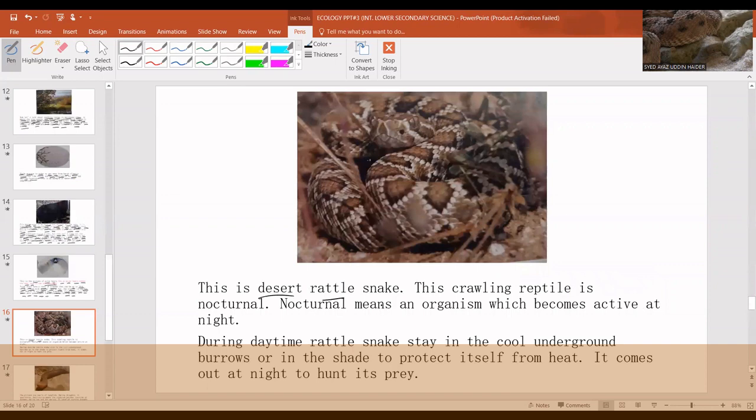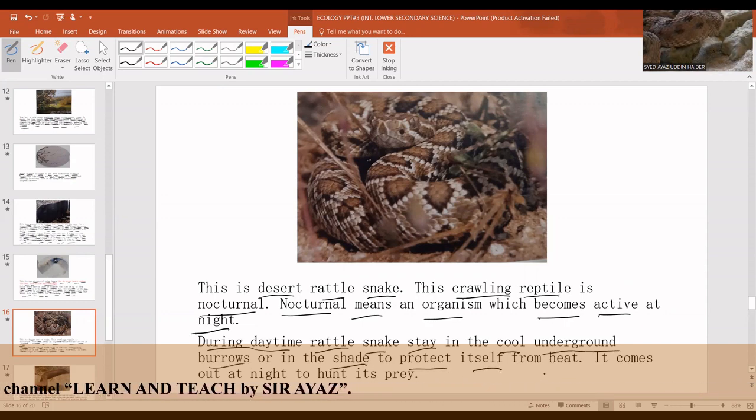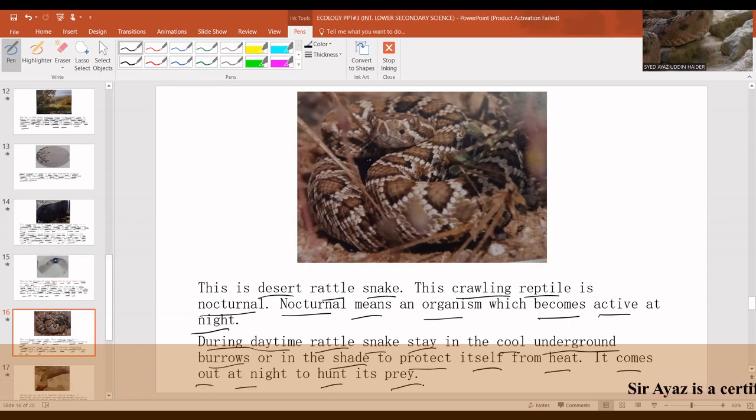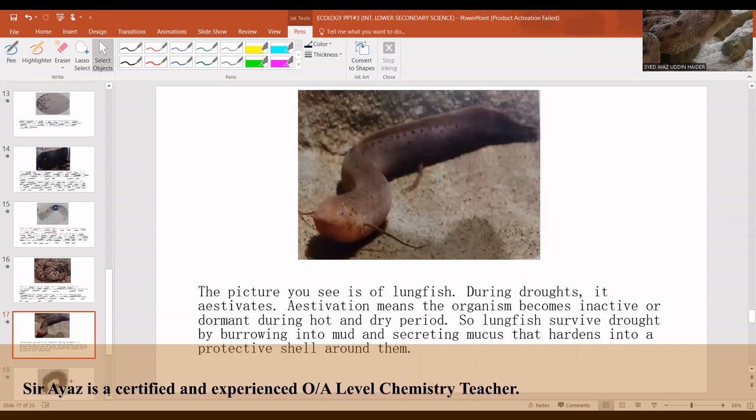This is a desert rattlesnake. This crawling reptile is nocturnal. Nocturnal means an organism which becomes active at night. During daytime rattlesnakes stay in cool underground burrows or in the shade to protect itself from heat. It comes out at night to hunt for food which is its prey. Its prey usually includes rats and other small rodents.